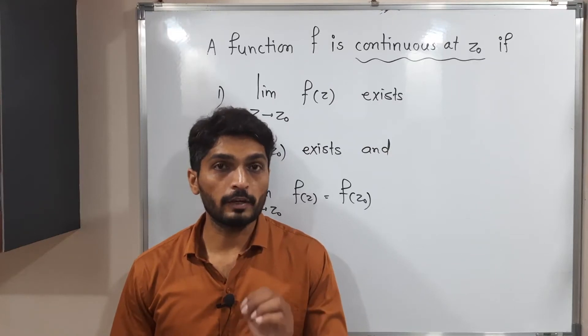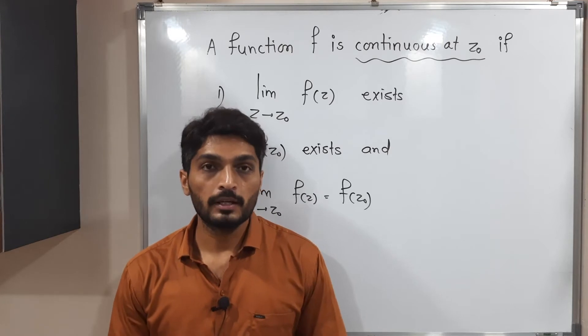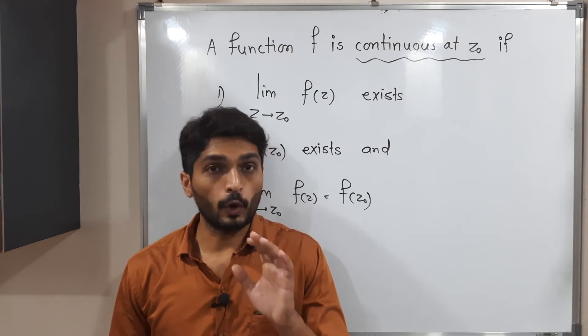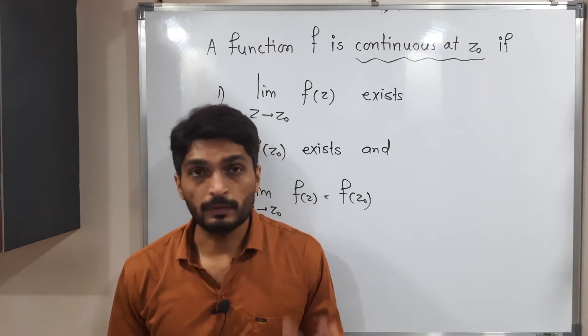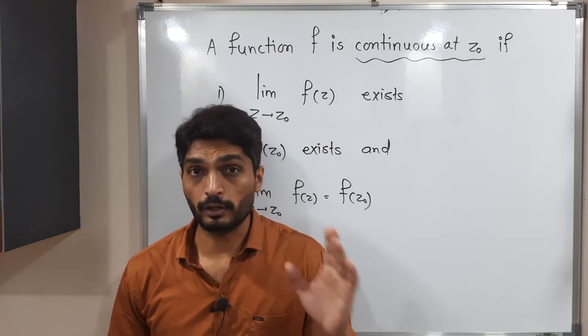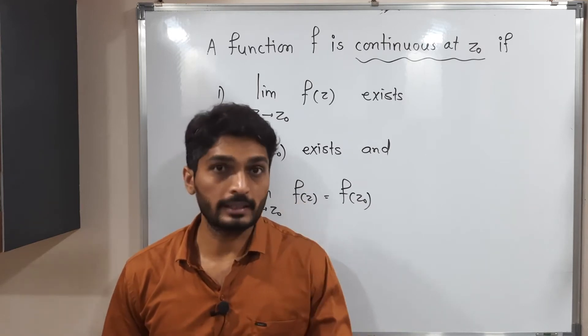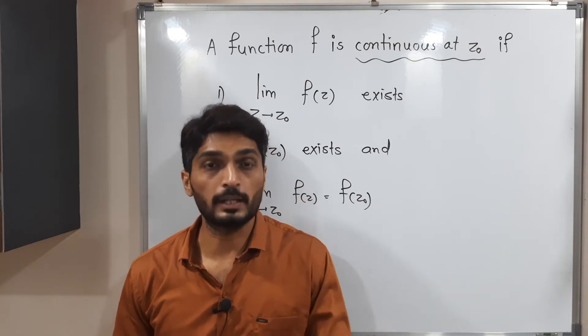Let us discuss continuity of a complex-valued function. When we say the function is continuous, for real-valued functions we are already familiar with the definition. When we say the function is continuous, if that limit z tends to z naught, f of z exists, if f of z naught, that thing also exists, and both of them should be equal.